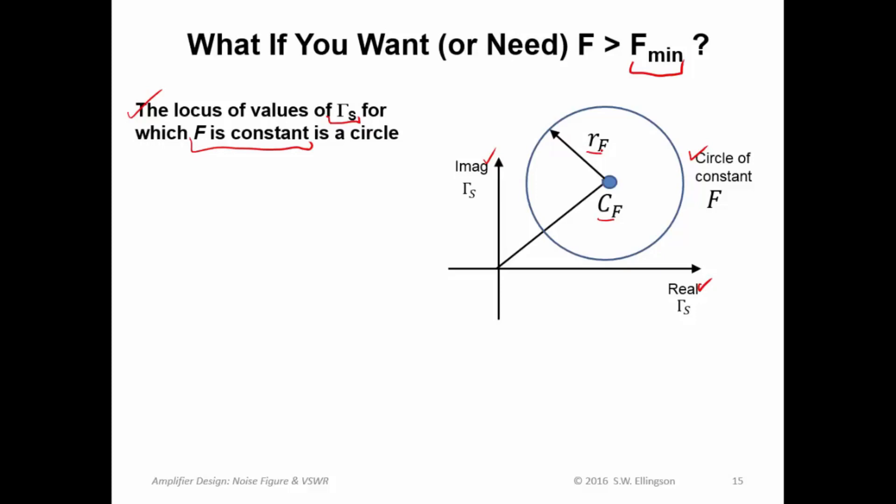Now, just think about this for a second. If we're trying to minimize the noise figure, that reflection coefficient is right there. Any other reflection coefficient is represented by a circle with a greater radius, and we can determine those parameters.